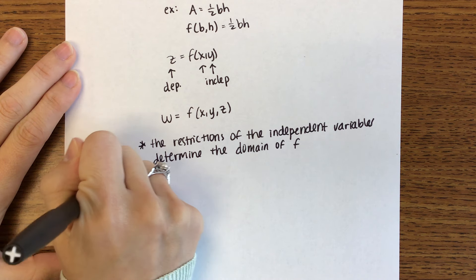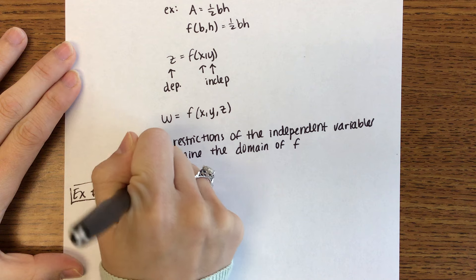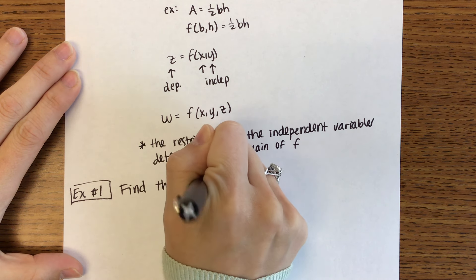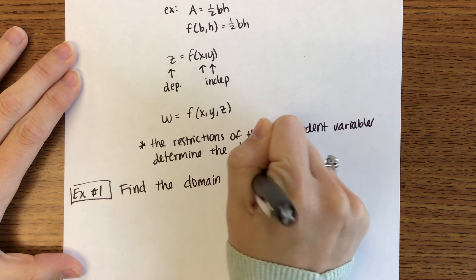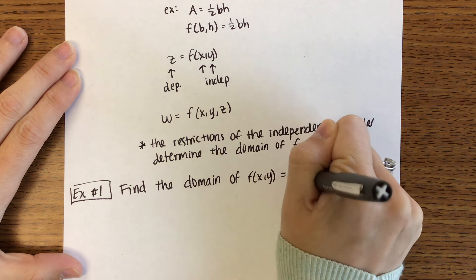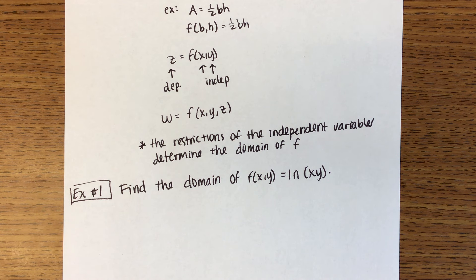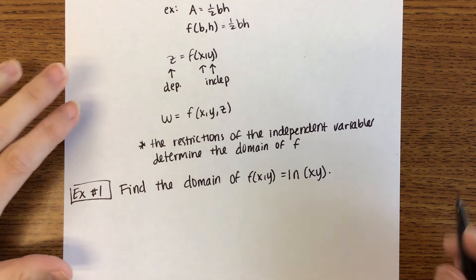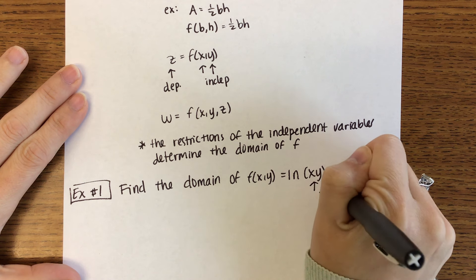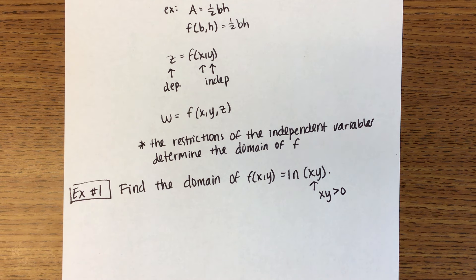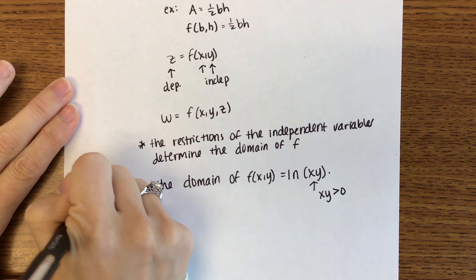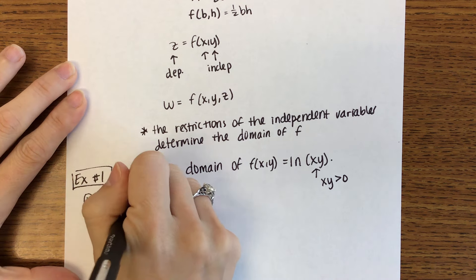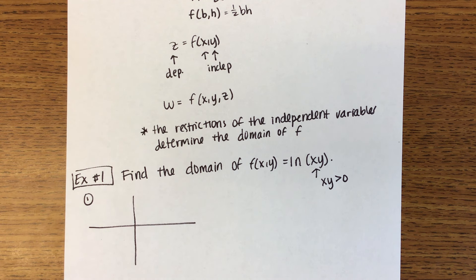Here's our example. We are going to find the domain of f of x, y equals natural log of the quantity xy. There are two different ways that you can express the domain — one is in words, and one is in a picture. Natural log: we only take the natural log of quantities bigger than zero, so we need xy to be greater than zero.